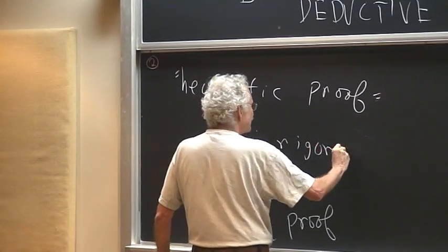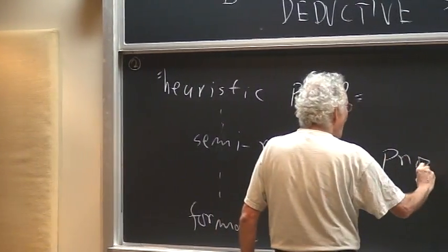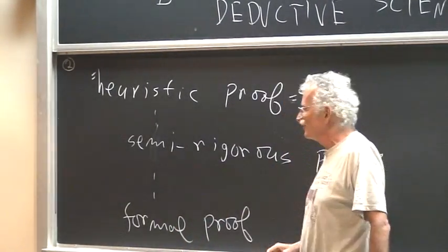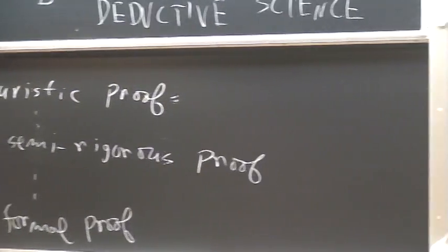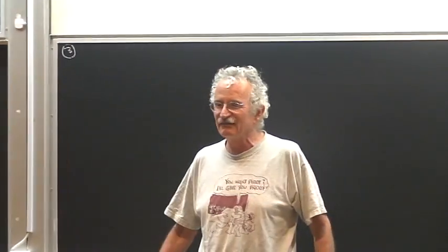And once again, a traditional mathematician would frown at the notion of semi-rigorous proof. A proof is either rigorous or non-rigorous. It is not even a proof.